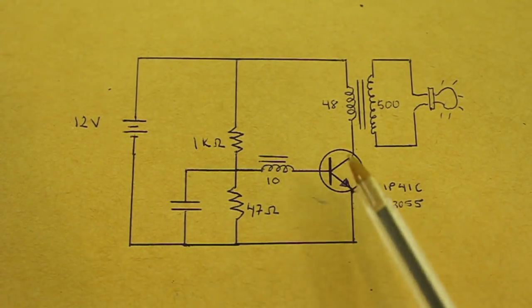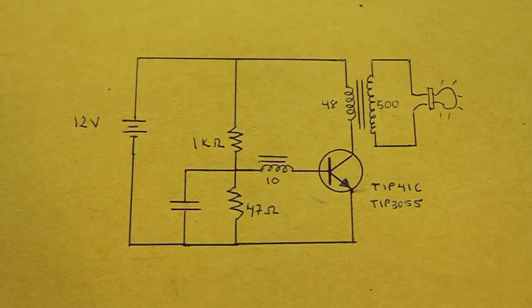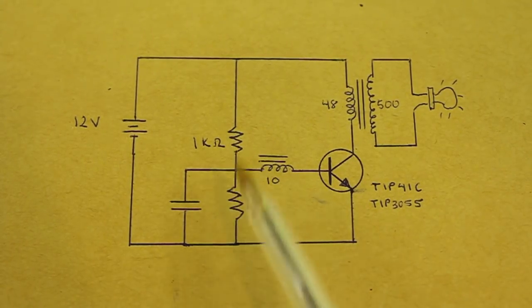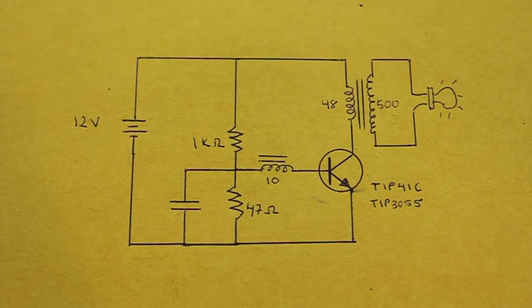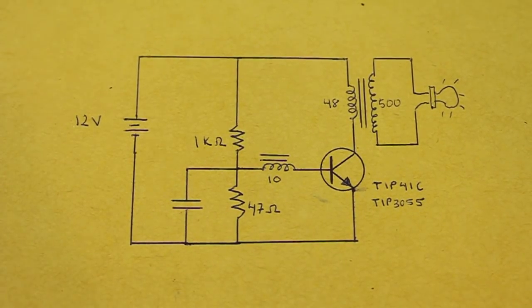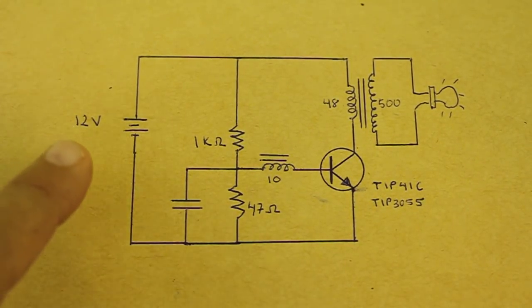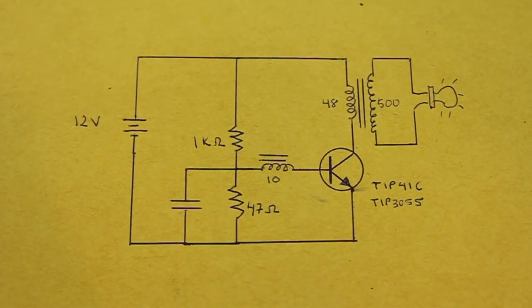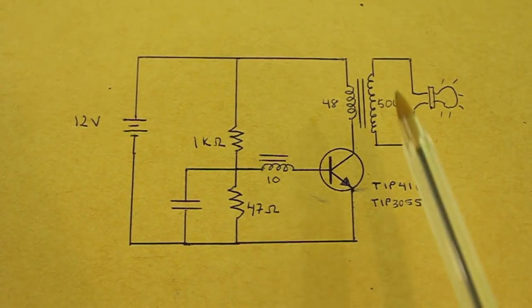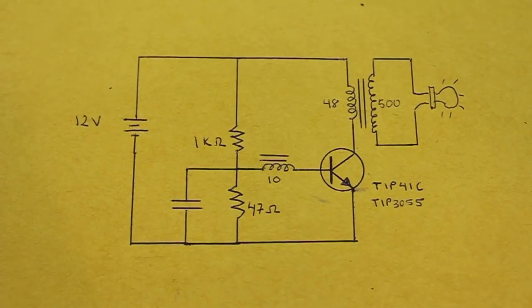You can use any high power NPN transistor and the two resistors are of one watt. The circuit works with 12 volts DC. Now we will see how to build the transformer.